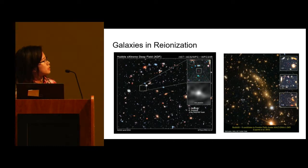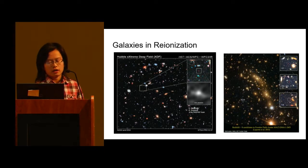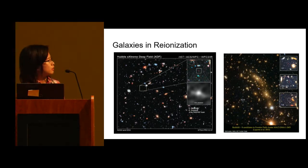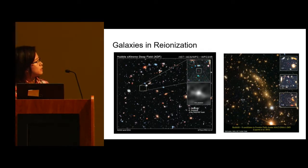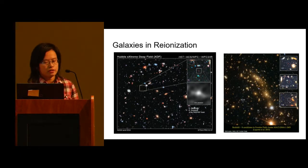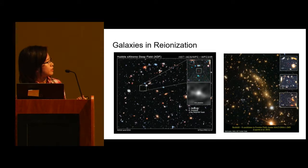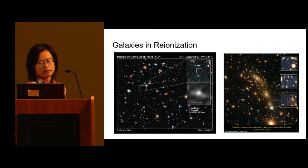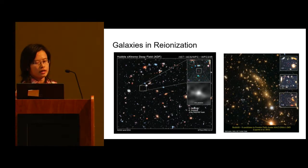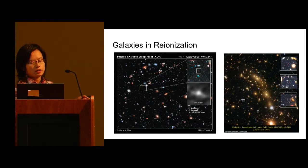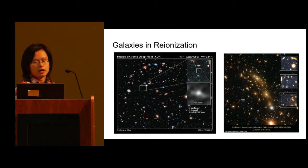People have used telescopes like the Hubble Space Telescope to study these very distant galaxies. Most of the galaxies you can see in the picture are actually foreground galaxies. The galaxies in reionization, because they are very distant, you will have a hard time finding them. Although they look very faint, they are actually very bright galaxies in that epoch.